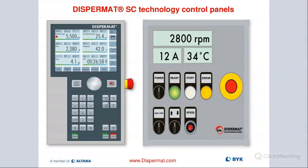Both safety features — the container clamp must be tight and the working area must be established, with the blade inside the container — otherwise the machine will not turn on. On the right side is a very simple control panel for our SC model, which is good for production. It's very simple — can't really break it, and it's perfect for that type of environment.